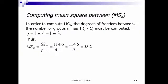To compute the mean square between, we take the sum of squares between and divide by the degrees of freedom between. We already computed the sum of squares between as 114.6. The degrees of freedom between is the number of groups minus 1 — we had 4 groups, so 4 minus 1 is 3. So 114.6 divided by 3 is 38.2. That's our mean square between. If you had 5 groups, your degrees of freedom would be 4.